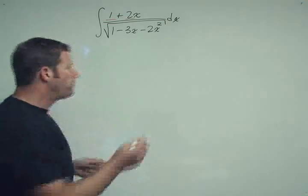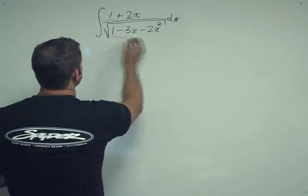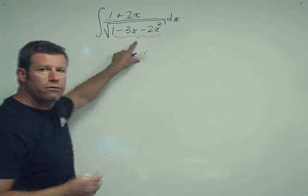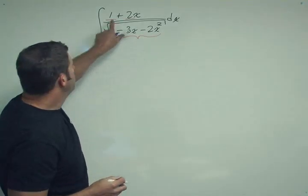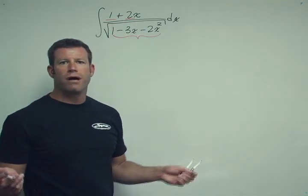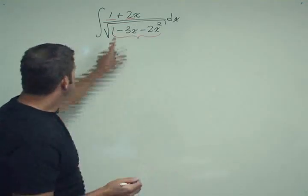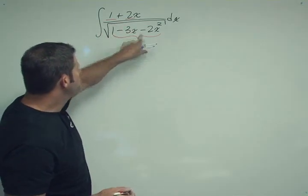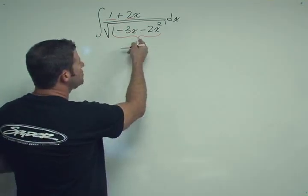If the problem were to easily fall apart, then this thing in the bottom, when we take the derivative of it, we would get the top. Then we would just have integral of du over square root of u, which is a polynomial. That's a simple one. But we don't have that in this case, because the derivative of the bottom, let's say u equals this whole thing.